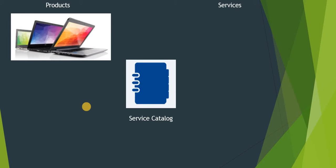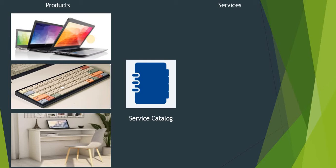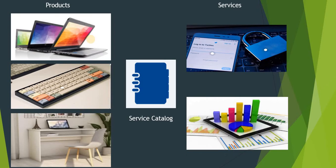Service catalog consists of products and services. It can be a laptop, a desktop, a keyboard, a mouse, or any computer accessory. You can also order furniture like a chair if your organization permits that. In terms of services, you can reset your password through service catalogs, request new reports, or request new services — for example, if you want to restart a server, that can also be done through the service catalog. So it's a very powerful feature of ServiceNow.